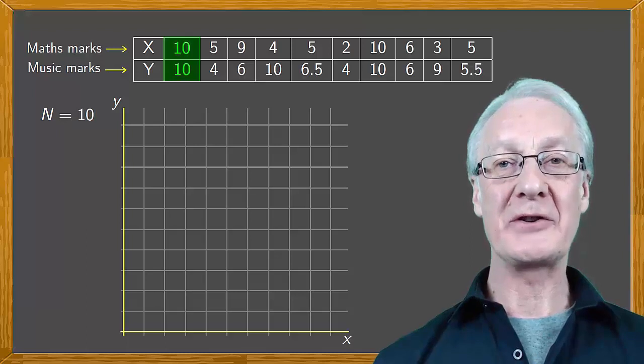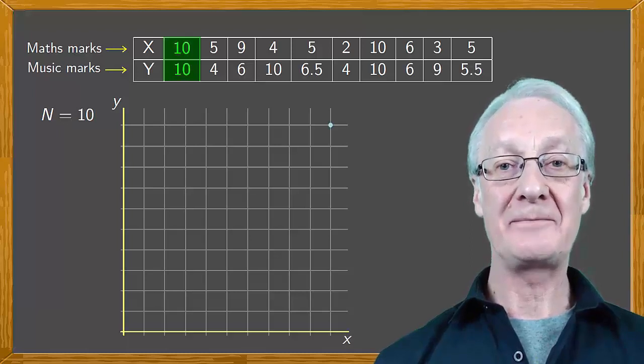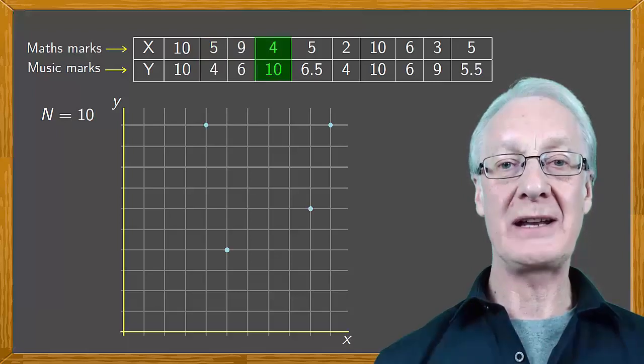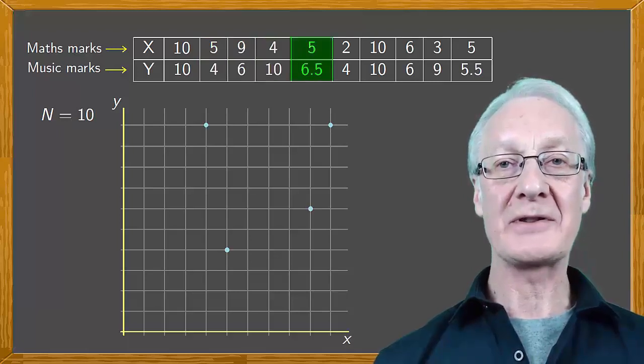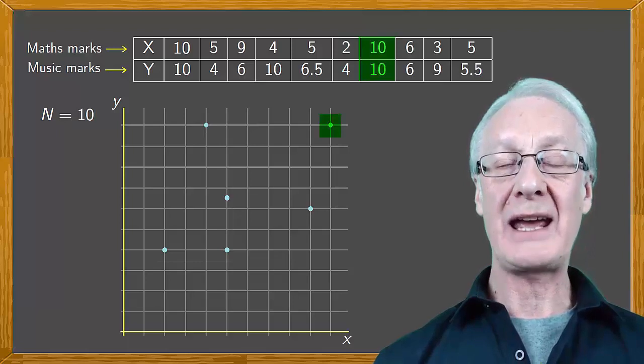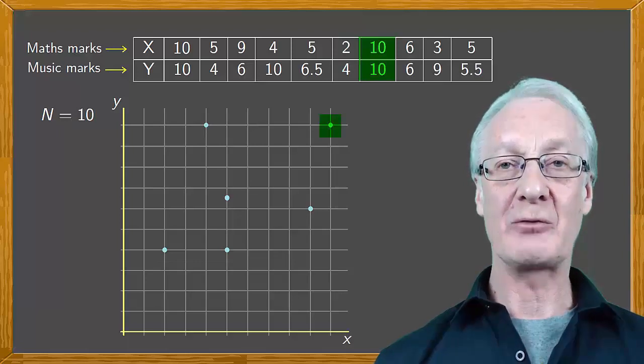Now we represent the data for the first student, (10, 10), here. The second student, (5, 4), here. Third, (9, 6). Fourth, (4, 10). Fifth, (5, 6.5). Sixth, (2, 4). And the seventh student, (10, 10).